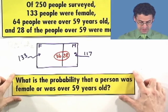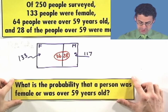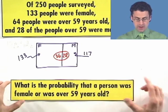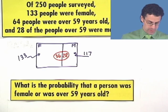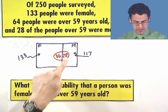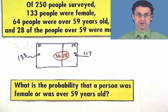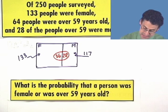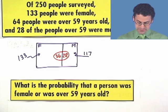Well, let's figure out what region that's going to be. Well, you're female. That means you could be anywhere in here. So, any female is eligible, all 133 of them. But in addition, you could be 59.